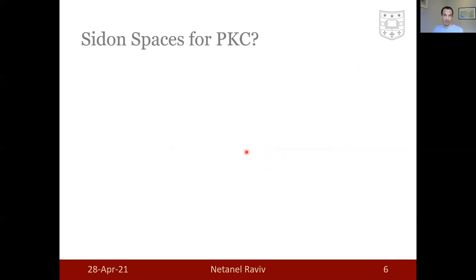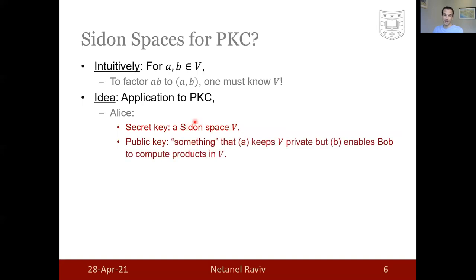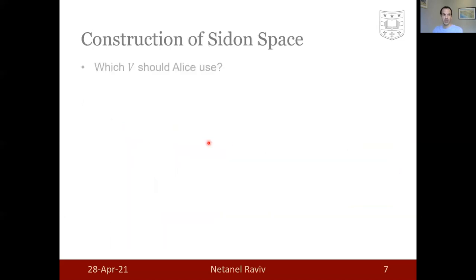Why should they be applicable to cryptography? Intuitively, for a and b in Sidon space V, to factor the product to the constituent elements, one must know V. A different V would result in a different factorization. So the idea here is Alice choosing a secret Sidon space V, publishes something that enables the sender to compute products but still keeps V private. The sender will then encrypt its message a and b to the ciphertext ab without knowing V. Alice would then be able to factor ab to a and b since she knows V, but Eve will not be able to do that. In what follows, we show that this can be done not only with Bob not knowing V, but even without knowing that there is any extension field in this key.